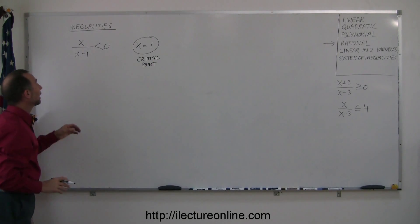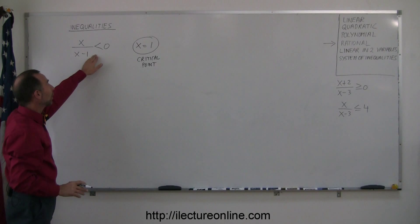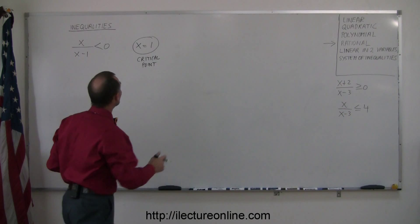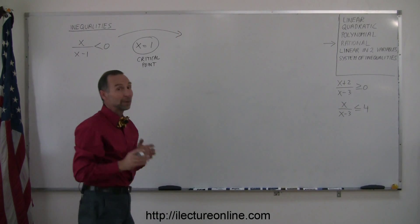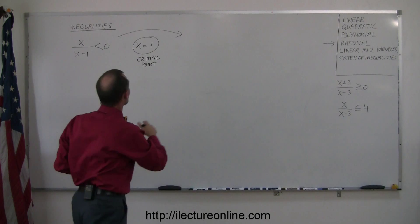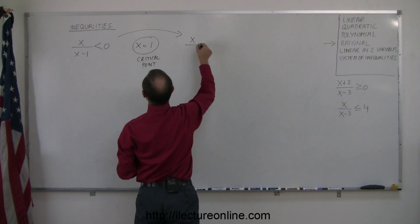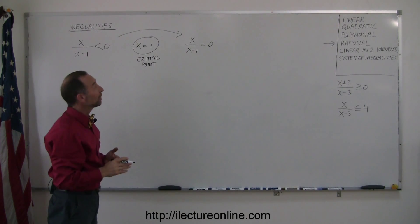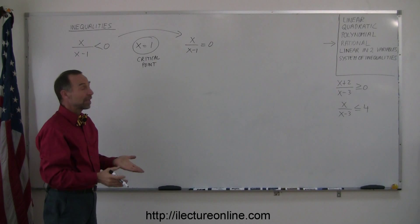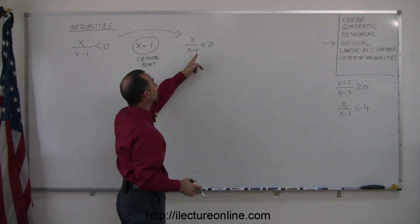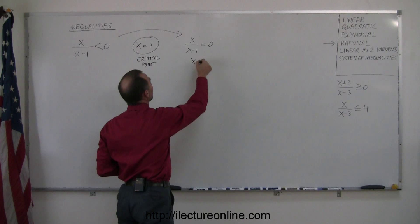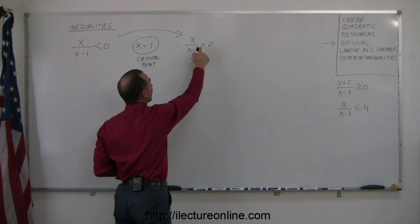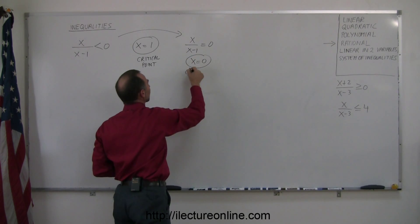The next critical point is found by taking this inequality and turning it into its equivalent equation. In other words, changing the inequality sign to an equal sign. The reason why we do that is to find the other critical point. So we get x divided by x minus 1 is equal to 0. What value in the numerator for x will make that a true statement? The only answer is x must equal to 0, because if x is 0, 0 divided by minus 1 is still 0. So here's the other critical point.